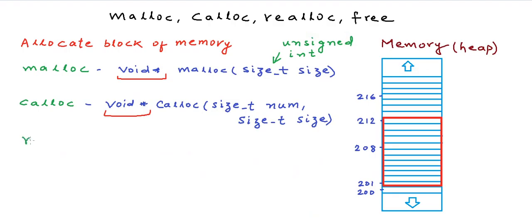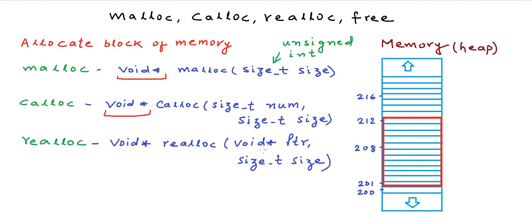The third function is realloc. If you have a dynamically allocated block of memory and want to change its size, you use realloc. It takes two arguments: a pointer to the starting address of the existing block, and the size of the new block. If a larger block is requested and contiguous memory is available, the existing block is extended; otherwise, a new block is allocated and the previous data is copied into it. Let's now look at code examples.